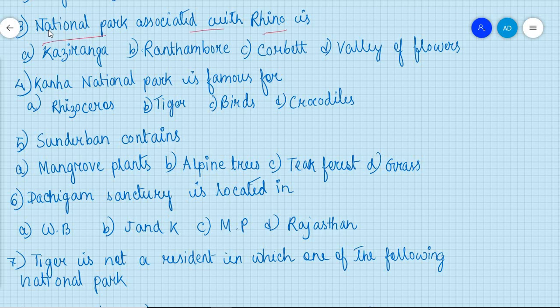The national park associated with rhino is — everyone knows that the national park associated with rhino is Kaziranga National Park, which is situated in Assam. The next question: Kanha National Park is famous for — Kanha National Park is situated in Madhya Pradesh and it is famous for tiger.